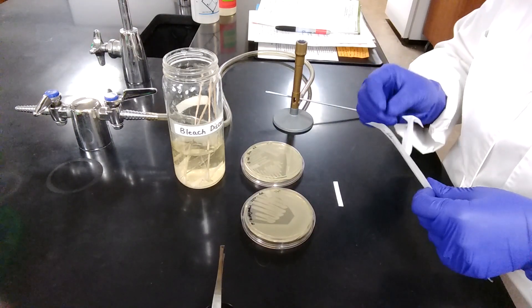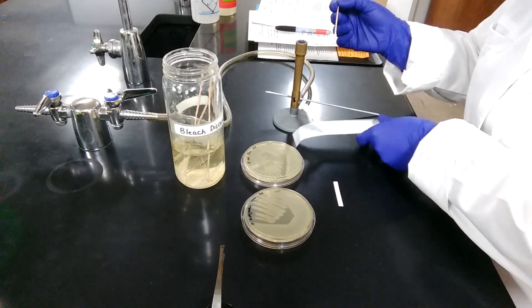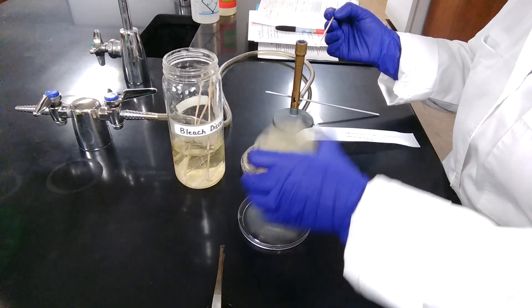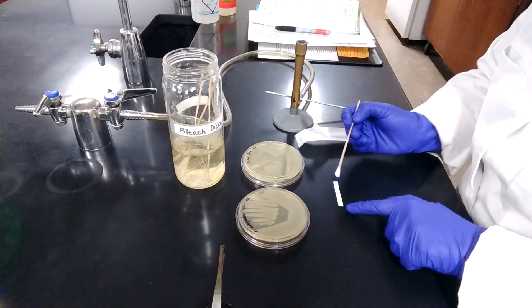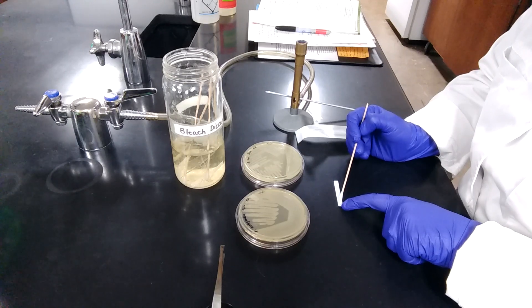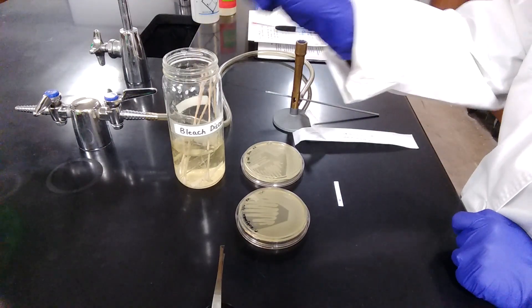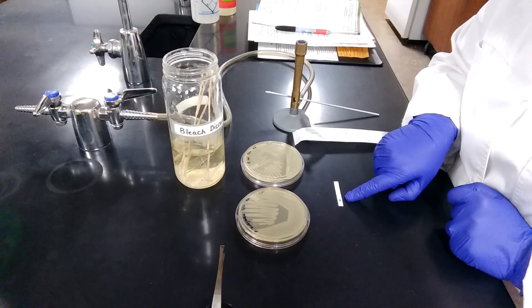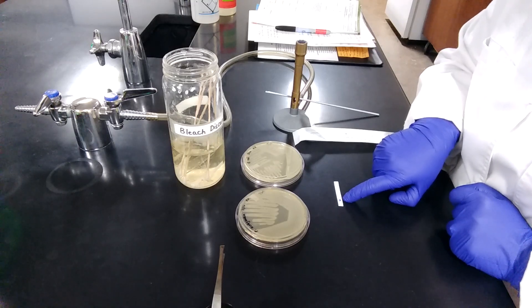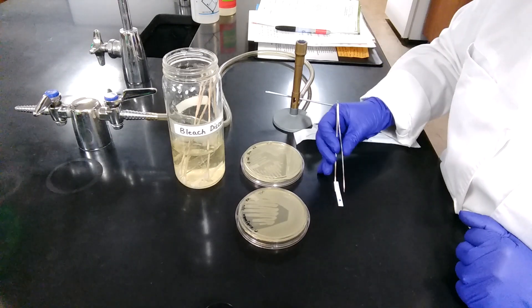Using the other sterile cotton swab, transfer the bacteria onto the paper strip. I'm transferring it to the other side of the paper. And gently dab the culture onto the paper strip and look for a development of deep blue or purple color immediately. And as you can see, this bacterial species has produced a very deep purple color on the paper.